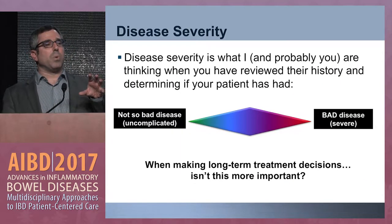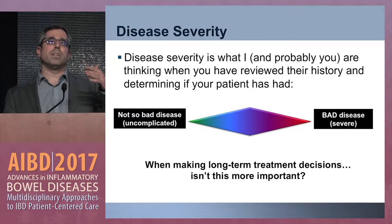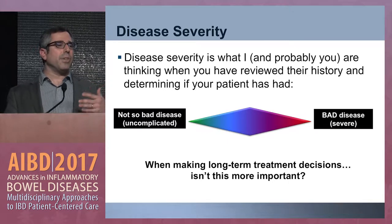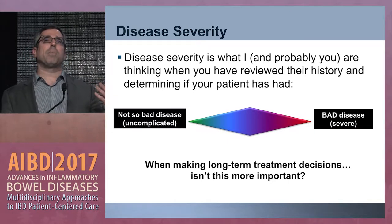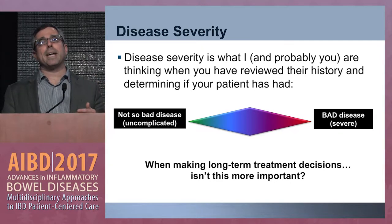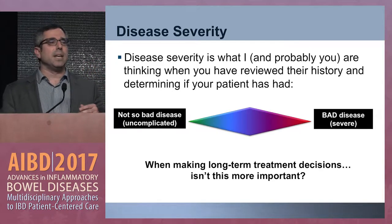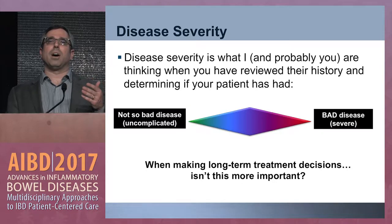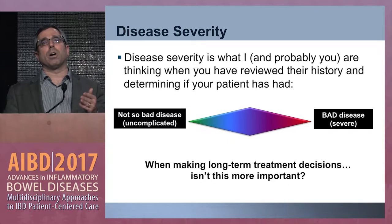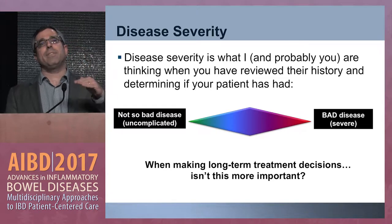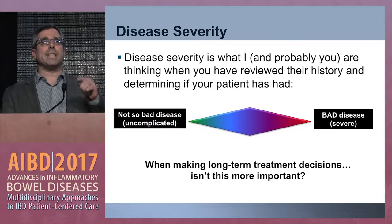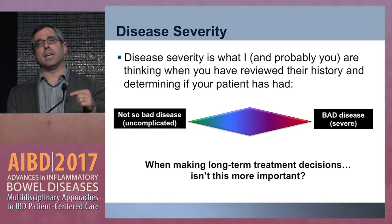Disease severity is what we think about when you review their history — going through that big stack of papers before a new patient visit and asking yourself: is this a patient with uncomplicated disease, or is this somebody who's had bad disease? That gestalt you're putting together in your mind is far more important when making decisions about what to put them on now. Getting patients better immediately isn't that hard — we have corticosteroids — but we have great response rates to bring disease activity down.